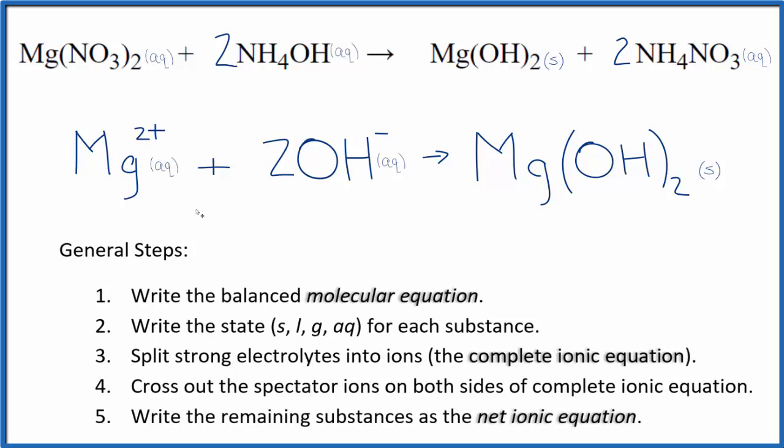You'll see that charge is balanced: we have 2+ on one side, and two times 1− equals 2−, giving a net charge of zero in the reactants. The products form a neutral compound, also net charge of zero. If you count the atoms, they're balanced as well. This is Dr. B with the balanced net ionic equation for Mg(NO3)2 plus NH4OH. Thanks for watching.